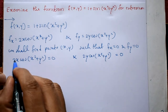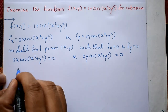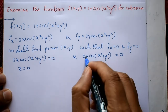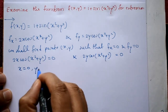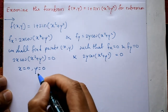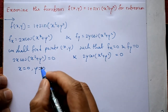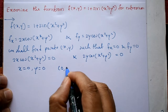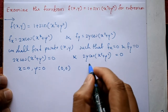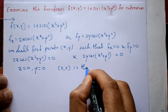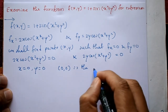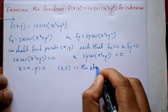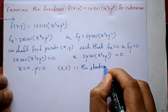From the first equation, 2x = 0, so x = 0. From the second, 2y = 0, so y = 0. Therefore, the stationary point is (0, 0).